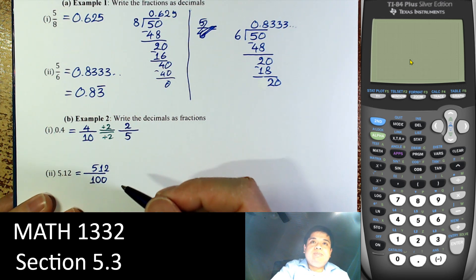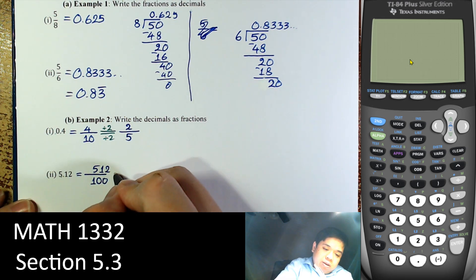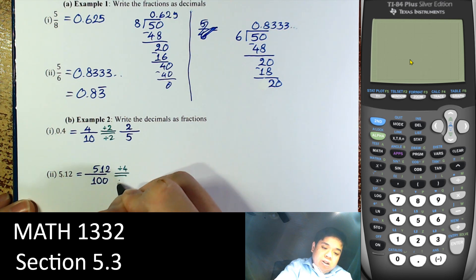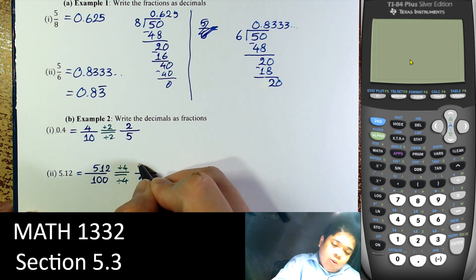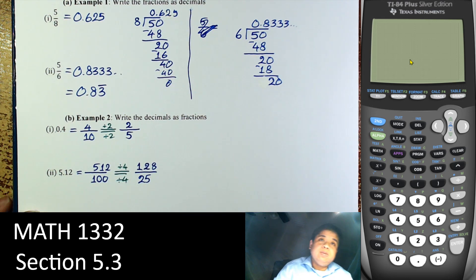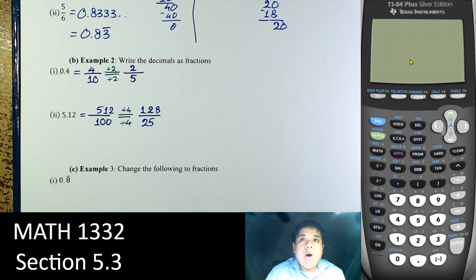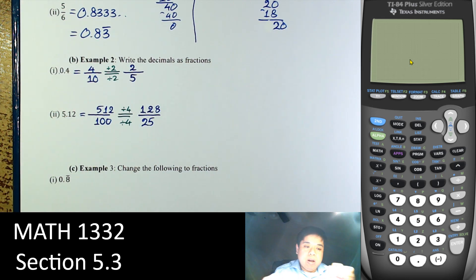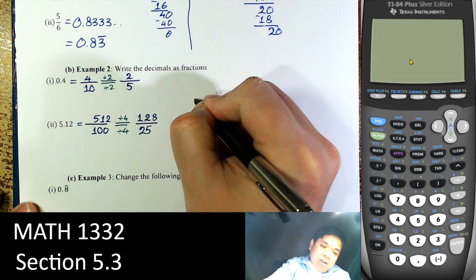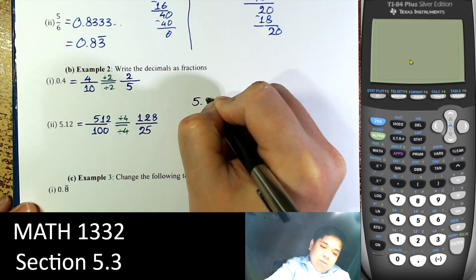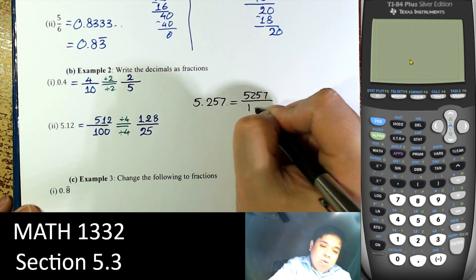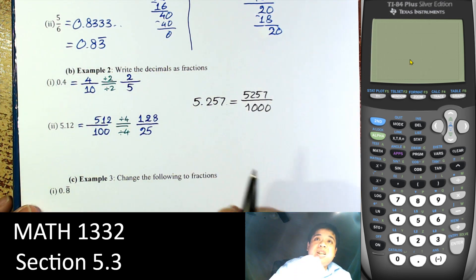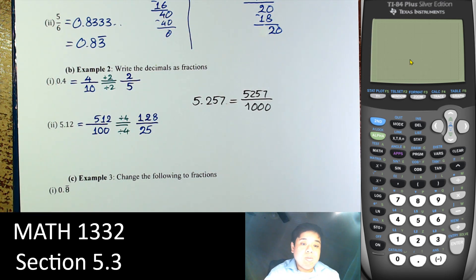For 0.512 and 100 as the denominator: both can be divided by 4, giving 128 over 25. In general, writing a decimal as a fraction depends on how many decimal places there are. For example, 3 decimal places means we divide by 1000. Of course, reduce if possible.